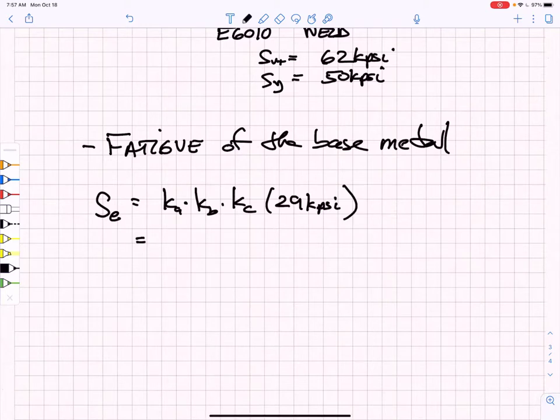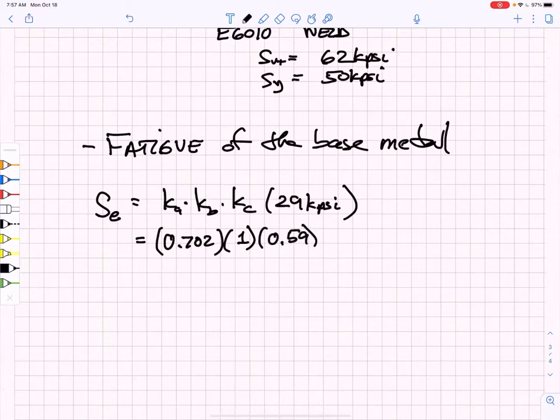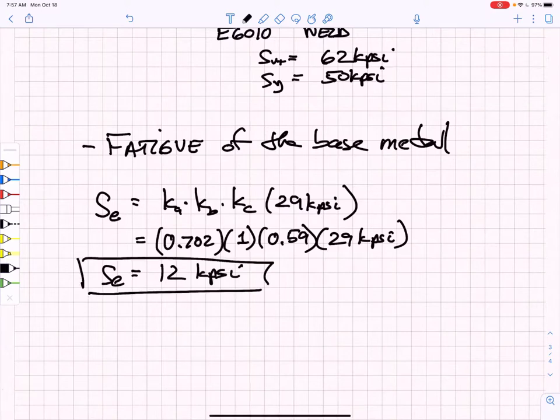If we calculate, we found KA to be 0.702. KB, the geometric size effect, is 1 for tensile loading. The loading type is shear, so we use 0.59, multiply that by 29 kpsi. That gives me an endurance strength estimate of 12 kpsi. We're going to need that in a short bit.